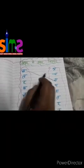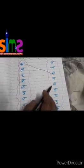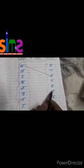La, tra, cha, sa, tha, sha, la. La ko la se milayenge — we will match La with La.